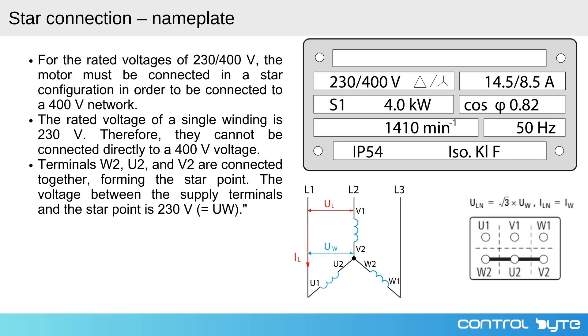In a star connection, each winding of the motor is connected in such a way that the end points of the windings labeled as W2, U2, and V2 are joined together to form a common star point. The other ends of the windings are connected to the supply phases L1, L2, and L3.